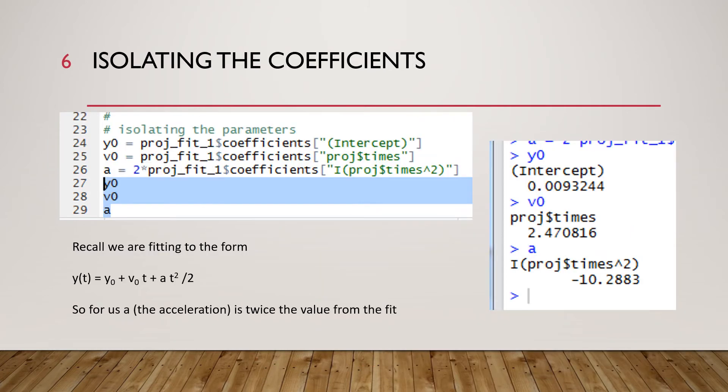In the theory these parameters are given specific names so the intercept is called y0 or the initial position. The slope is called v0 or the initial velocity and then the square term is the acceleration divided by 2 so the parameter that we find is a divided by 2 and if we want a then we must multiply the parameter by 2.